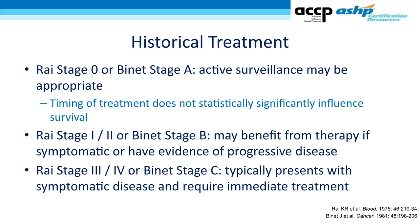Historically, we categorized patients with CLL into the Rai stage or the Binet stage. These were essentially scales that measured the patient's disease symptoms or burden of disease at that time; they did not consider any cytogenetic or other prognostic information. Early stages — Rai stage 0 or Binet stage A — could be considered for active surveillance, as studies showed that timing of treatment did not influence survival at these early stages.